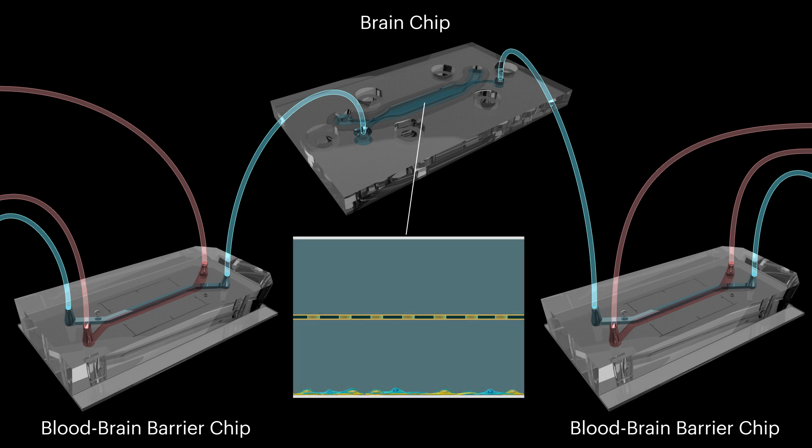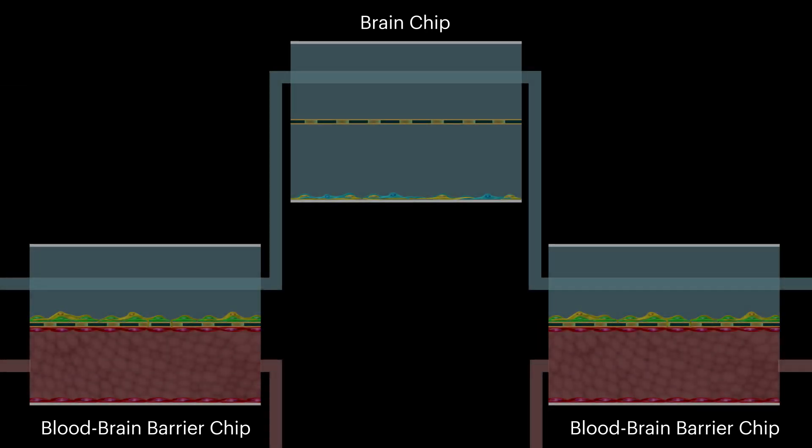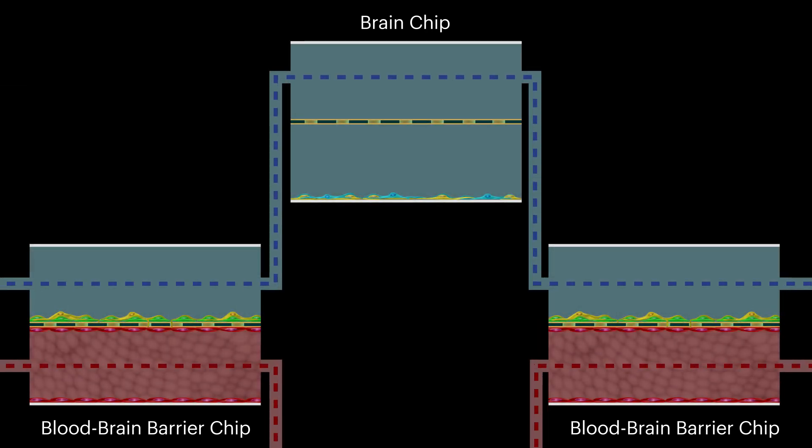The brain chip contains various types of neurons in one channel separated from another perivascular channel by a semi-permeable membrane. The perivascular channel of the brain chip is microfluidically linked to the two blood-brain barrier chips, allowing scientists to monitor the flow of molecules between the brain and its blood vessels.